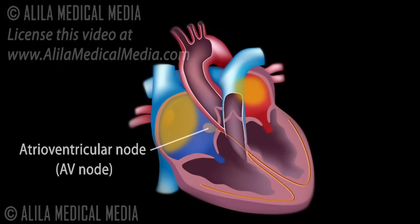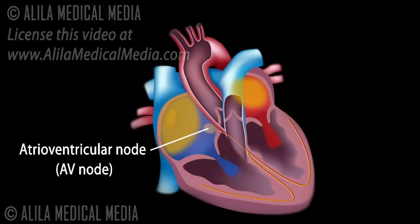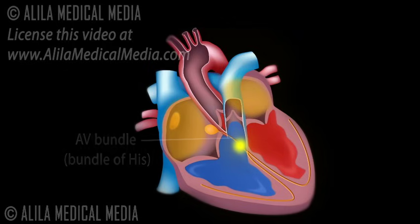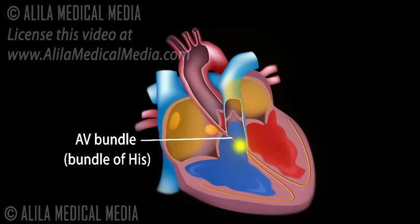The atrioventricular node, or AV node, located on the other side of the right atrium near the AV valve. The AV node serves as electrical gateway to the ventricles. It delays the passage of electrical impulses to the ventricles. This delay ensures that the atria have ejected all the blood into the ventricles before the ventricles contract. The AV node receives signals from the SA node and passes them onto the atrioventricular bundle, AV bundle, or bundle of His.